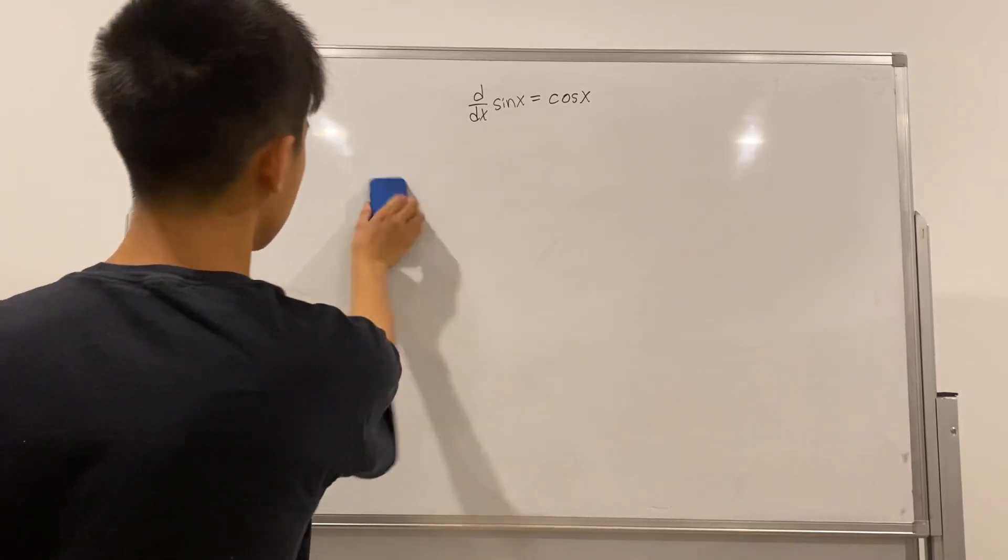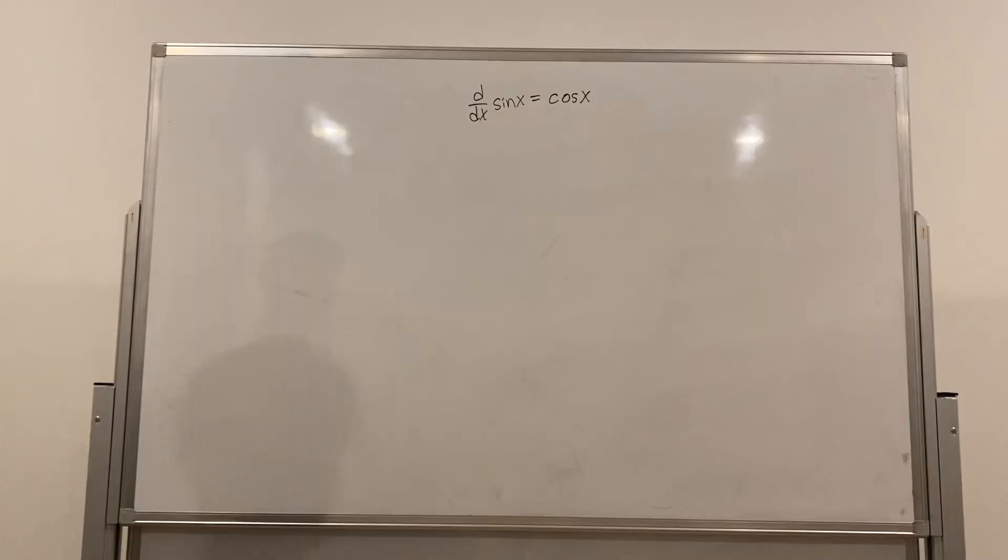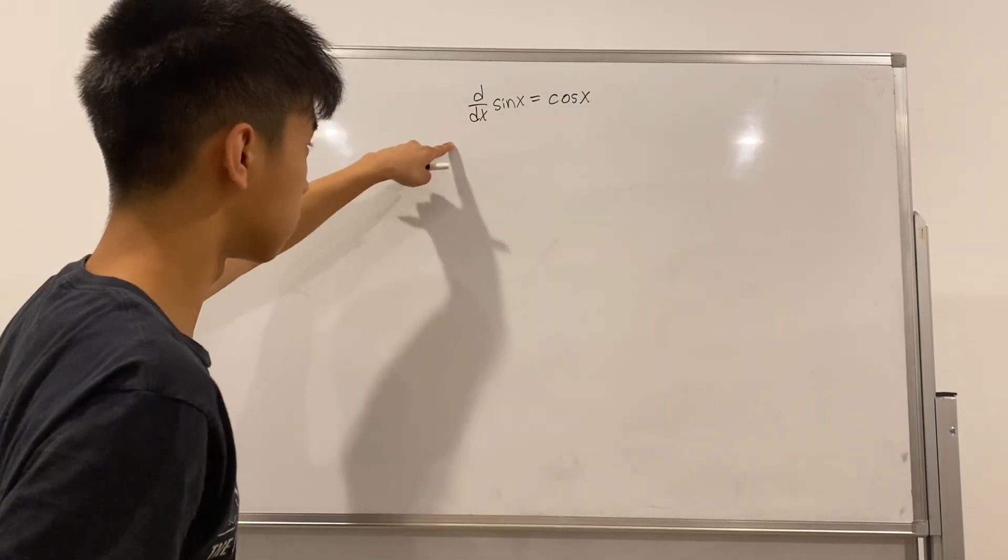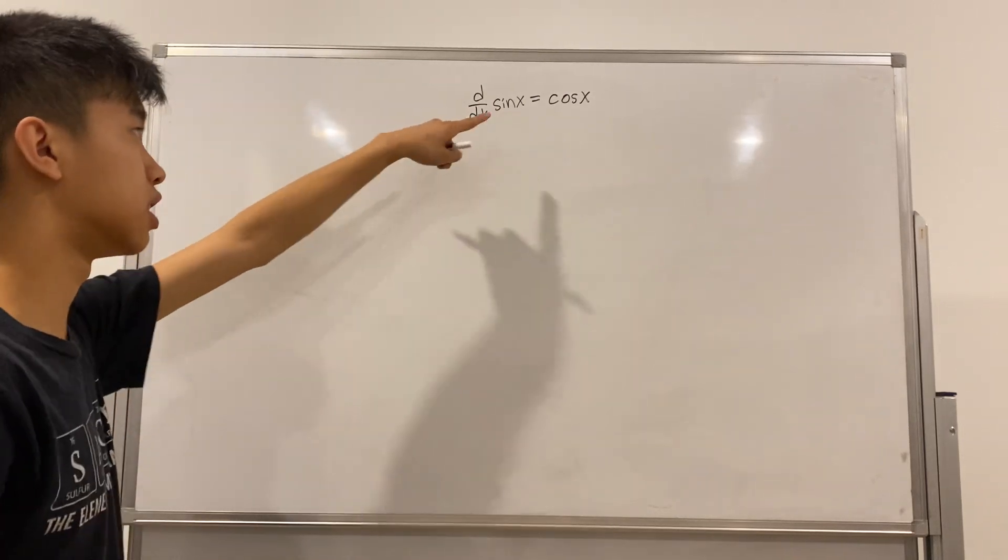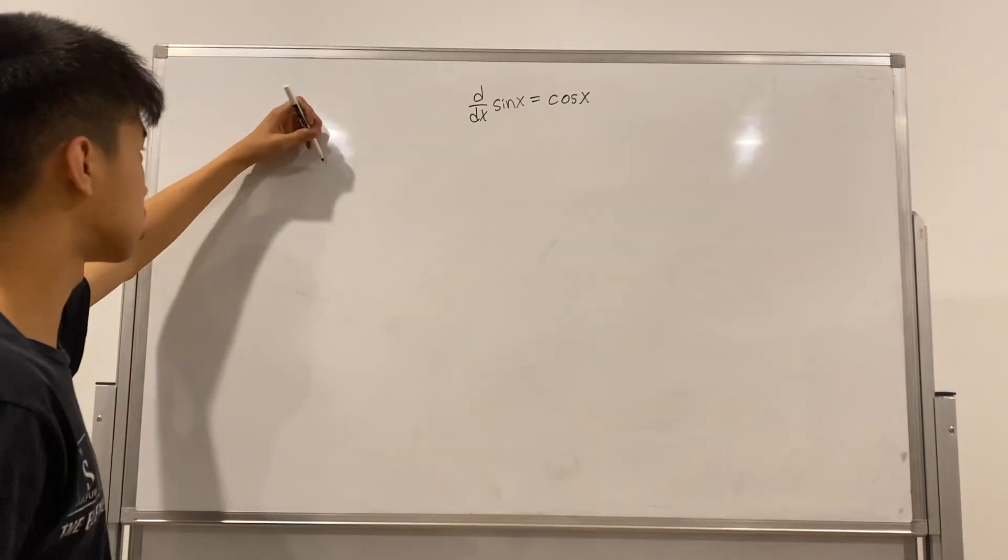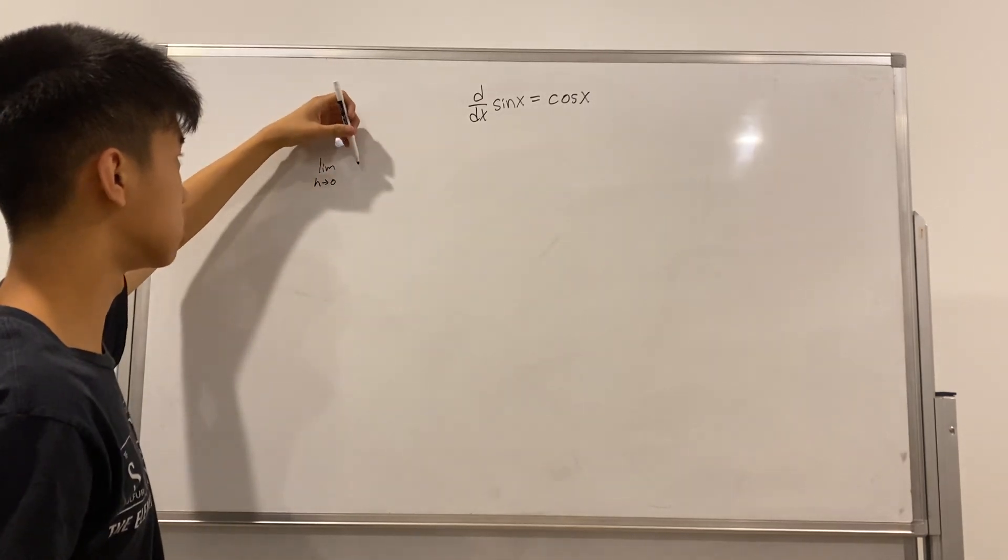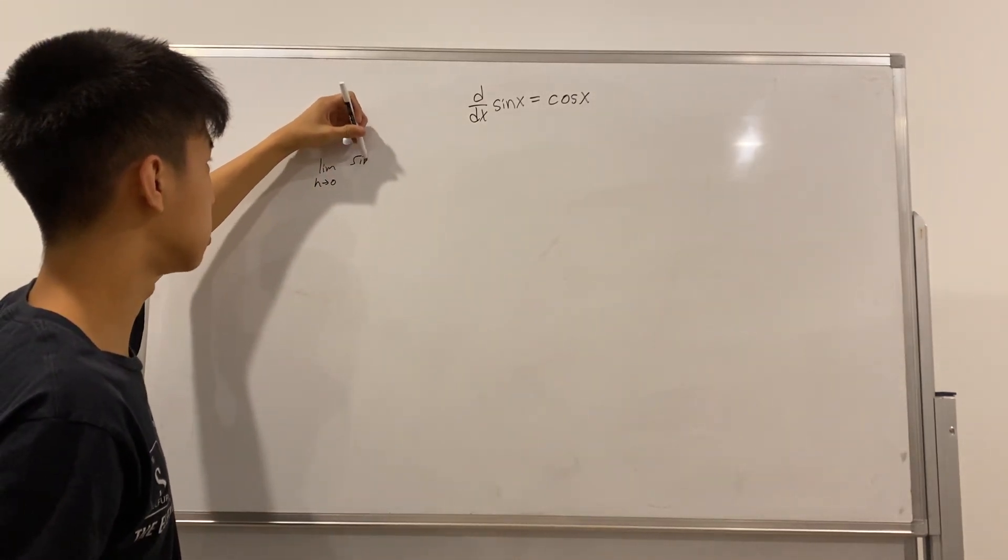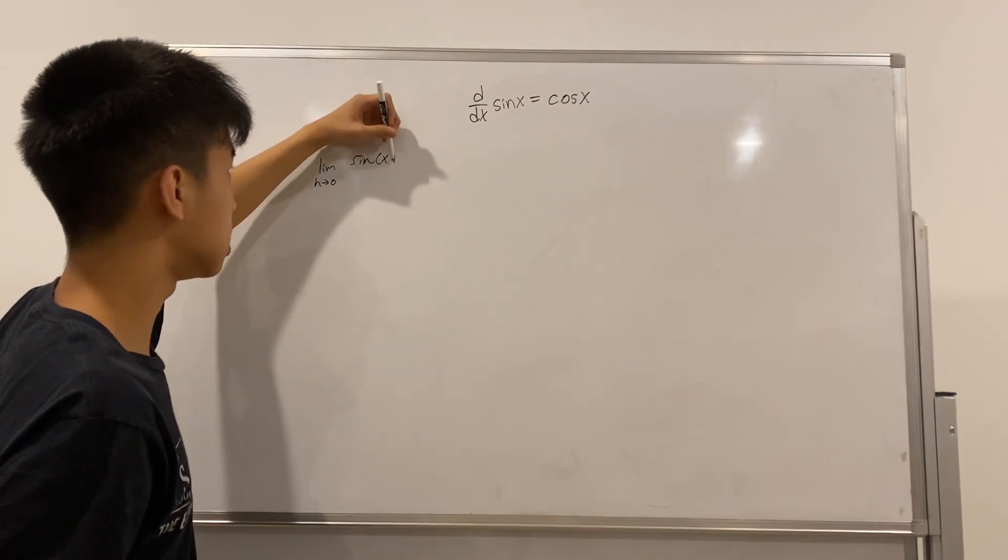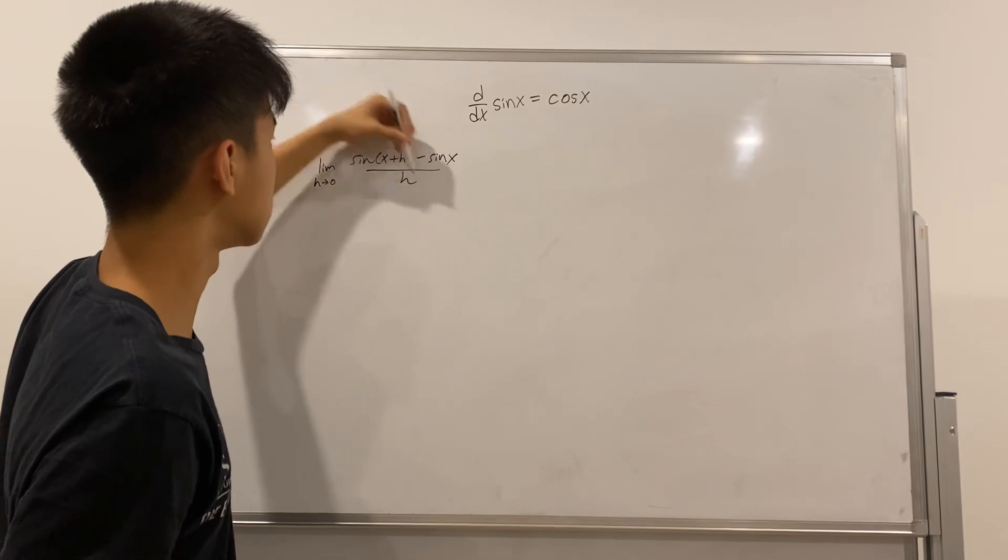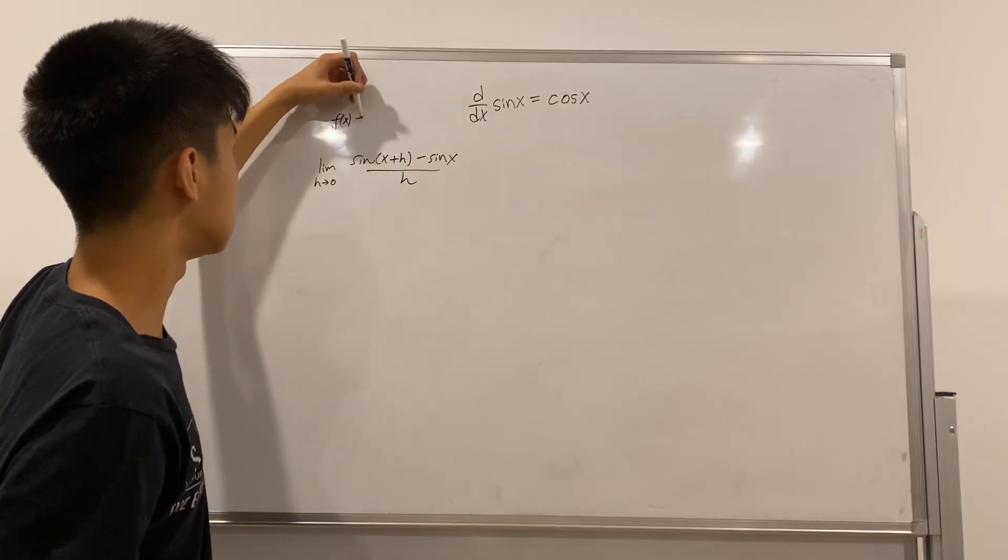Well, today we're going to be using the definition of a derivative to figure out why that is. So, let's start. Limit as h approaches 0 of sine of x plus h minus sine of x over h, since our f of x equals sine of x.